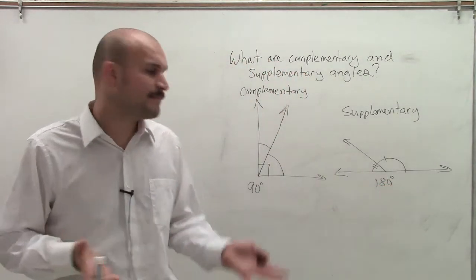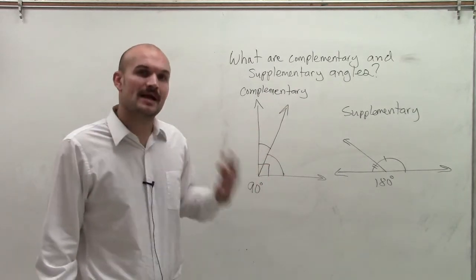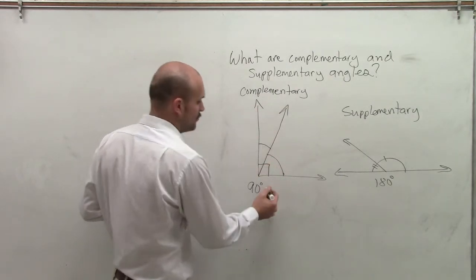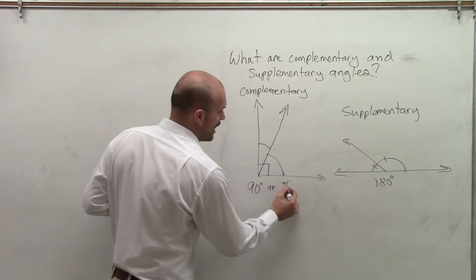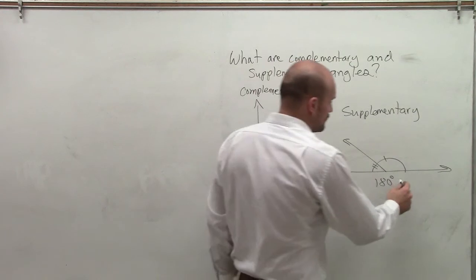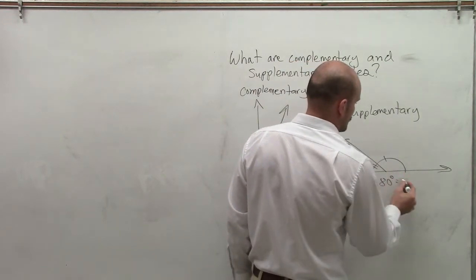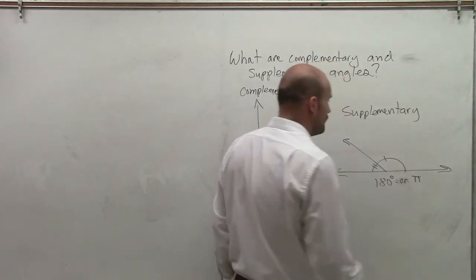But in trig we've got to remember what is the equivalent of 90 degrees in radians. And if you need to remember, the equivalent is pi over 2. And the equivalent to 180 degrees in radians is pi.